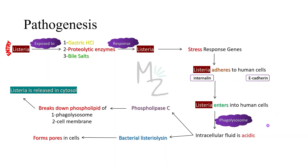Inside the human cell, Listeria is enclosed in a phagosome. The phagolysosome is the fusion of the phagosome with the lysosome — the mature phagolysosome has full capacity to kill any microbe, and Listeria will be engulfed by it. The intracellular fluid of human cells is acidic, and that acidity causes Listeria to release its toxin, Listeriolysin O. That toxin forms pores in the membrane, helping Listeria escape from the phagosome and enter the cytoplasm of the cell, thereby destroying the phagosome. It also releases phospholipase C, an enzyme that breaks down the phospholipid of the phagolysosome and its cell membrane. Now the sac containing Listeria is destroyed, so Listeria is free and enters the cytosol.